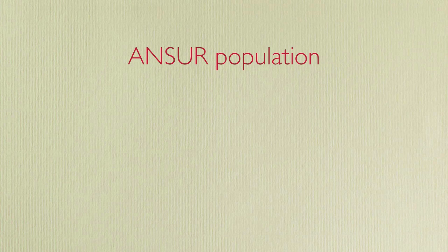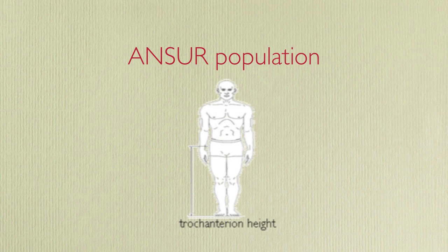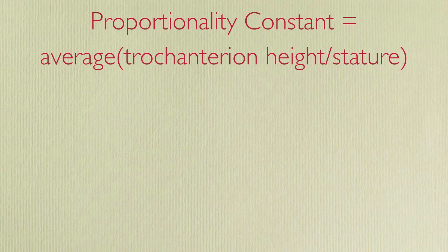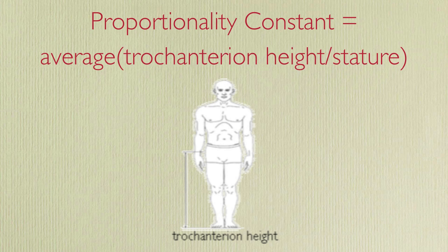The ANSAR population can be a source of detailed information about the relationships between different anthropometric measures. We can use this information to calculate new proportionality constants by finding the population's average value for a measure divided by stature. For instance, if you want to recreate a proportionality constant for leg length, you can use trochanterian height, which is well defined as the superior point of the trochanter of the right femur of a standing subject. As with all measures in ANSAR, this was measured consistently throughout the study, so we can be aware of the population used and the exact measure we are calculating.